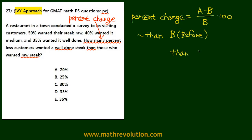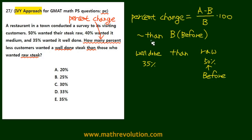So here we have 'than,' and behind we see the raw steak, and before we see the well-done steak. The raw was 50% and the well-done was 35%. The raw 50% is the before value, as the word that comes after the phrase 'something than' is the before value.